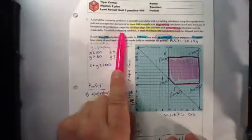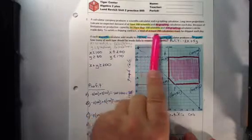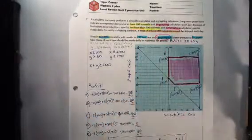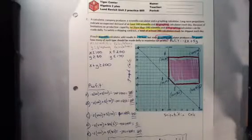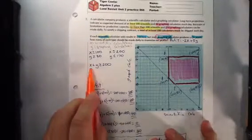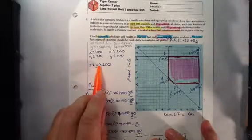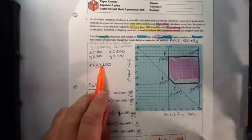To satisfy the shipping contract, a total of at least 200 calculators must be shipped every day. X plus Y greater than or equal to 200.